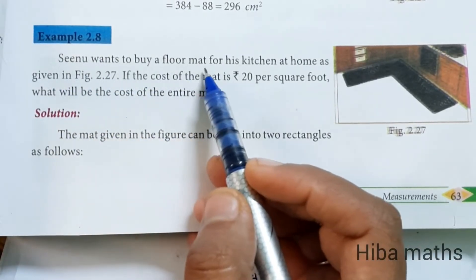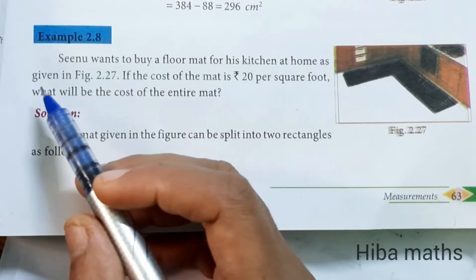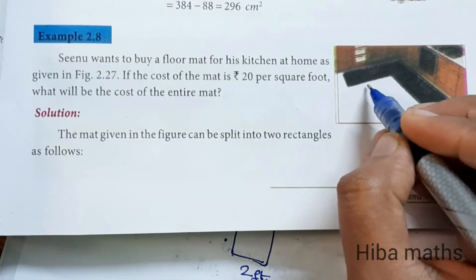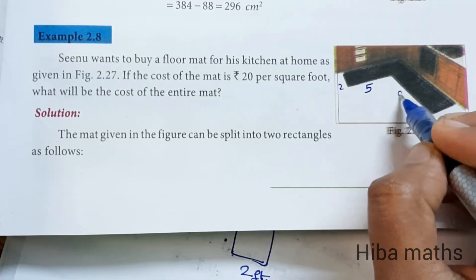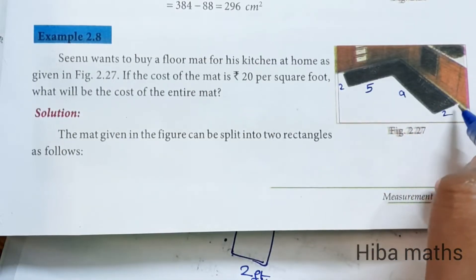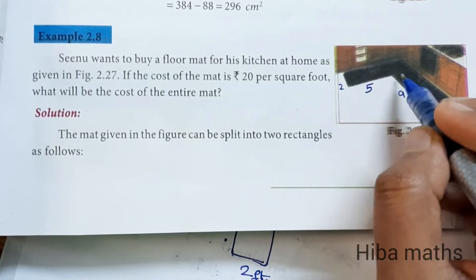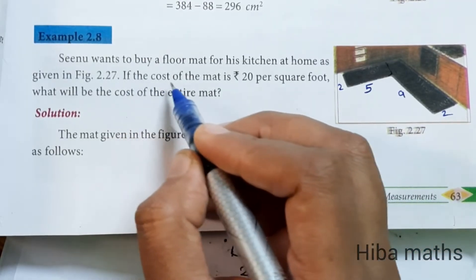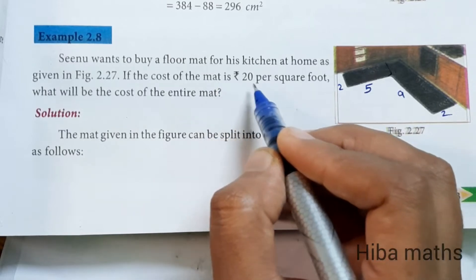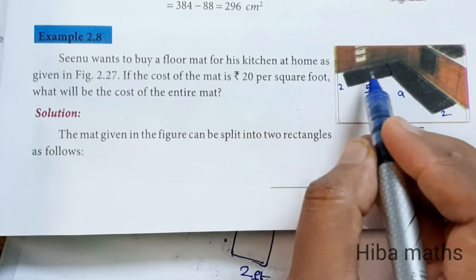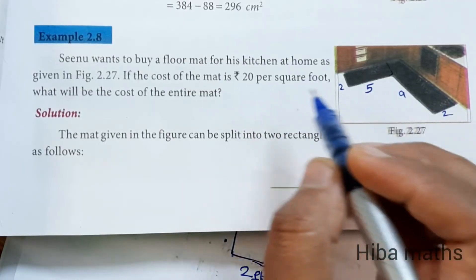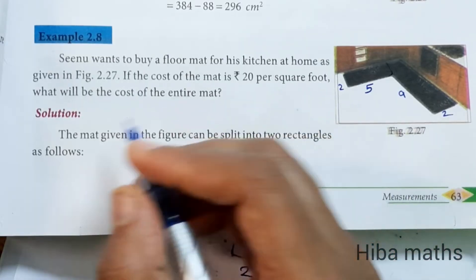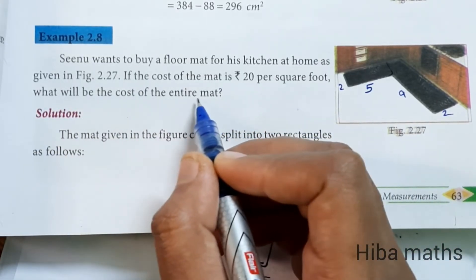Who wants to buy a floor mat for his kitchen? The dimensions are given in the figure: this is 5, this is 2, the total is 9, and this is 2. If the cost of the mat is 20 rupees per square foot, what will be the cost of the entire mat?